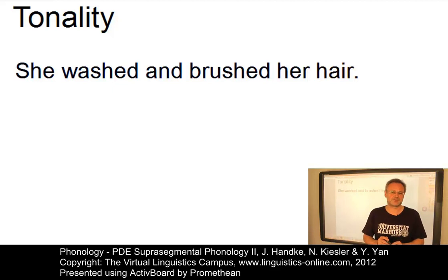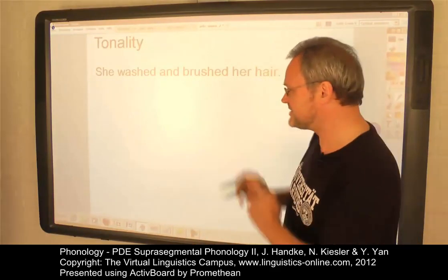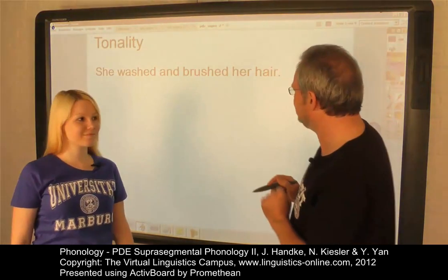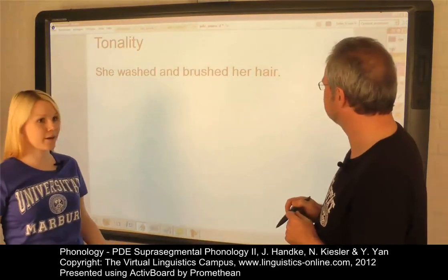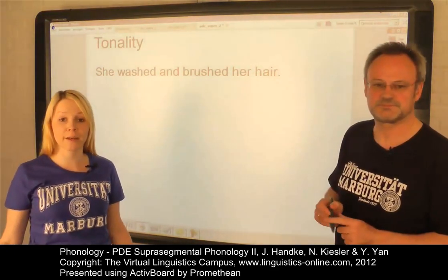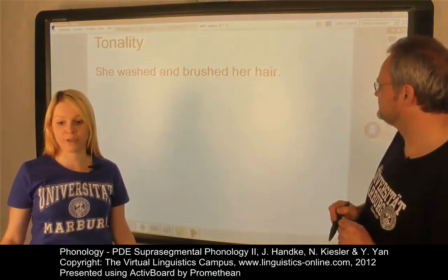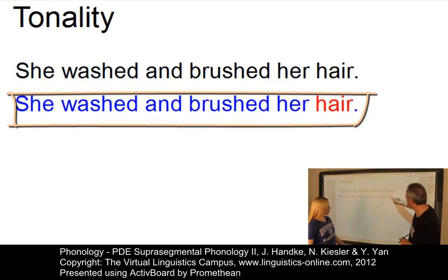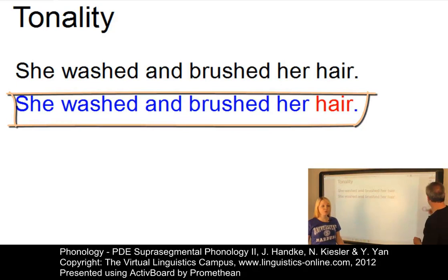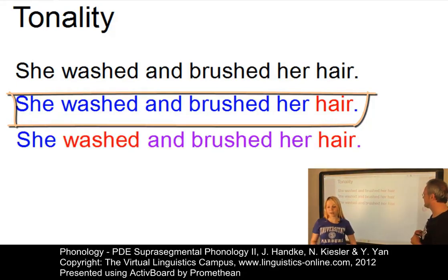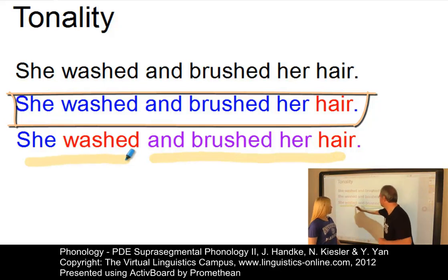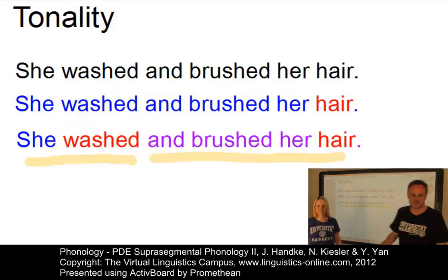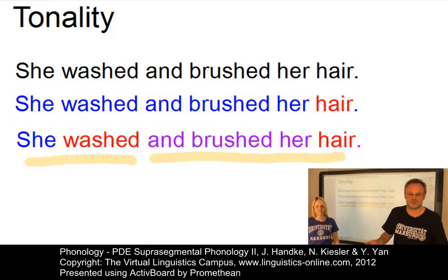Thus, the tonality of an utterance may be an important factor concerning its interpretation. Here is Natalie, my research assistant. Consider the utterance: 'She washed and brushed her hair.' There are two possible interpretations depending on how many tone units we have. If we only have one tone unit — 'she washed and brushed her hair' — it means she washed her hair and brushed her hair. But with two tone units, it means she washed something else, like her hands or clothes, and brushed her hair. The number of tone units influences the interpretation.